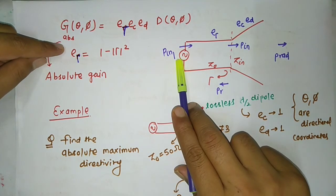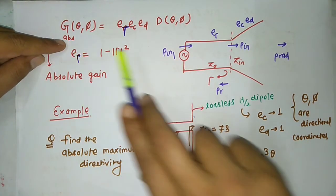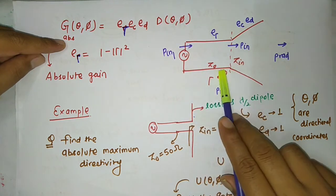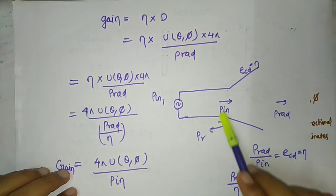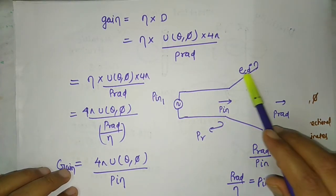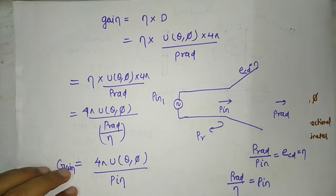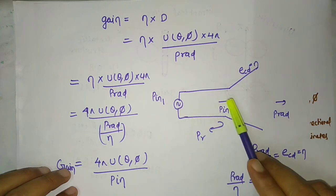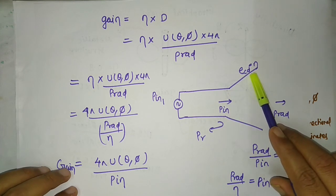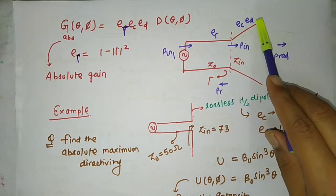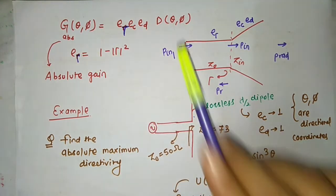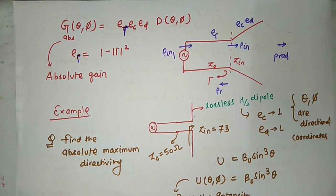In absolute gain, the power considered is the source power. In normal gain, only conductor loss and dielectric loss are considered. The difference between the two: normal gain considers conductor and dielectric losses only; absolute gain considers reflection loss, conductor loss, and dielectric loss. Otherwise the formula is the same.